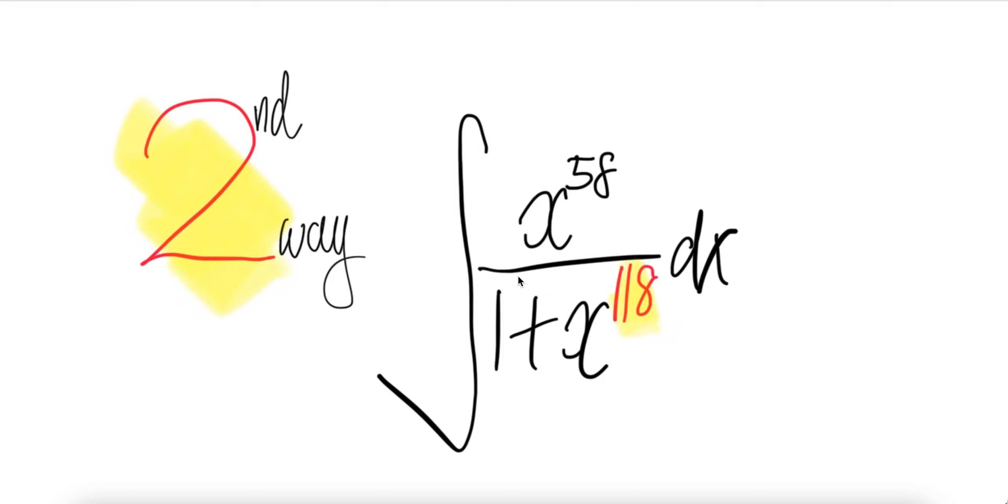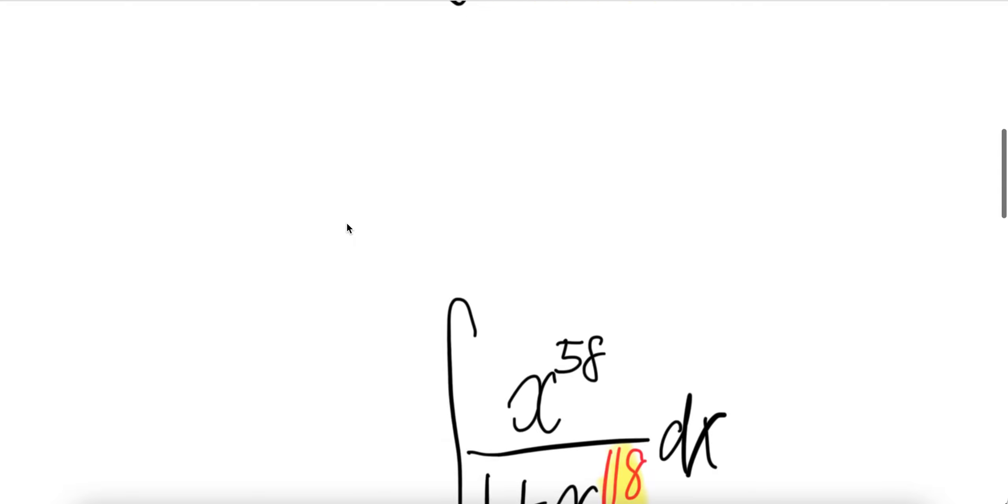Integral x to the power of 58 divided by 1 plus x to the power of 118 dx. Let's look at the second way.